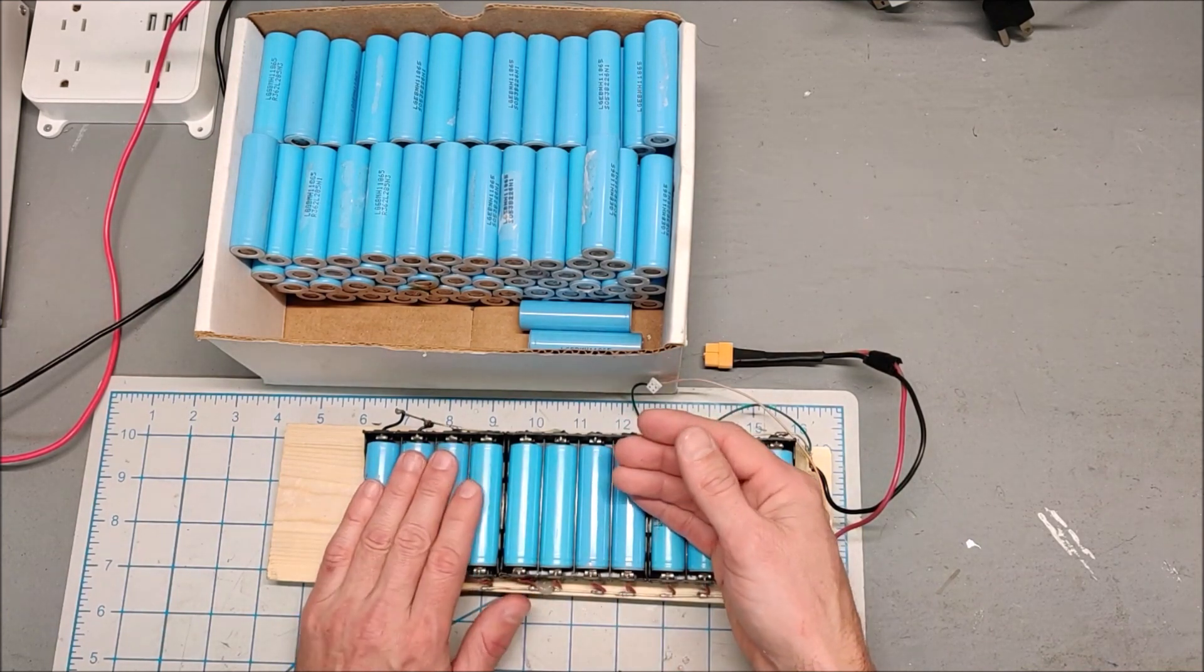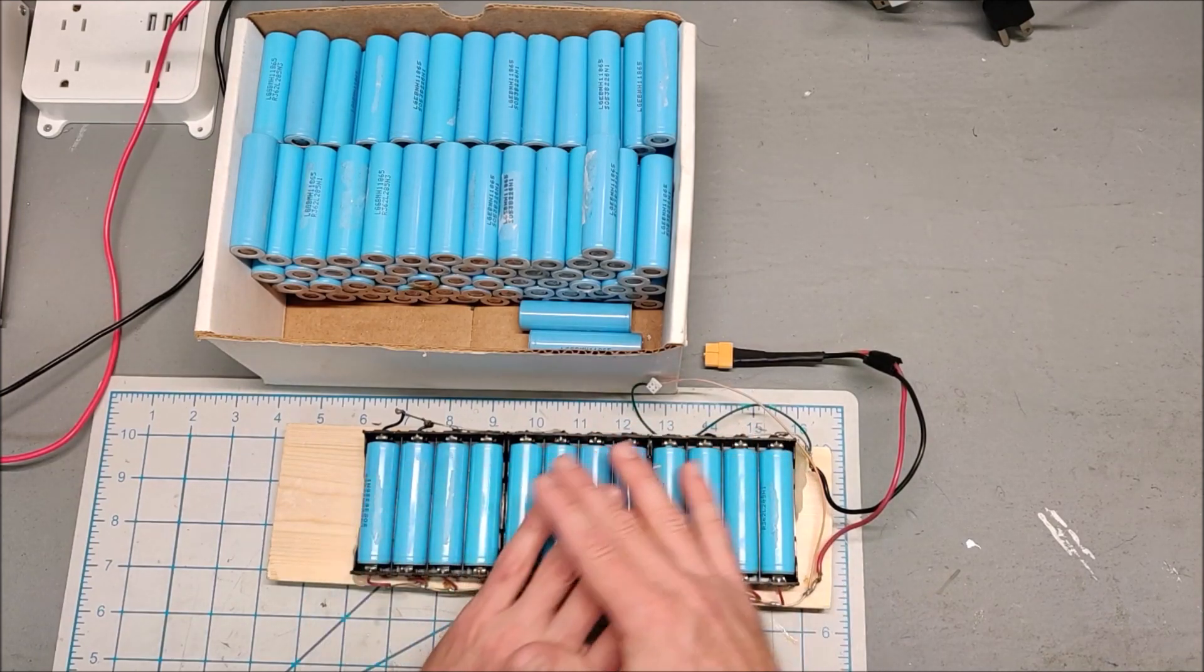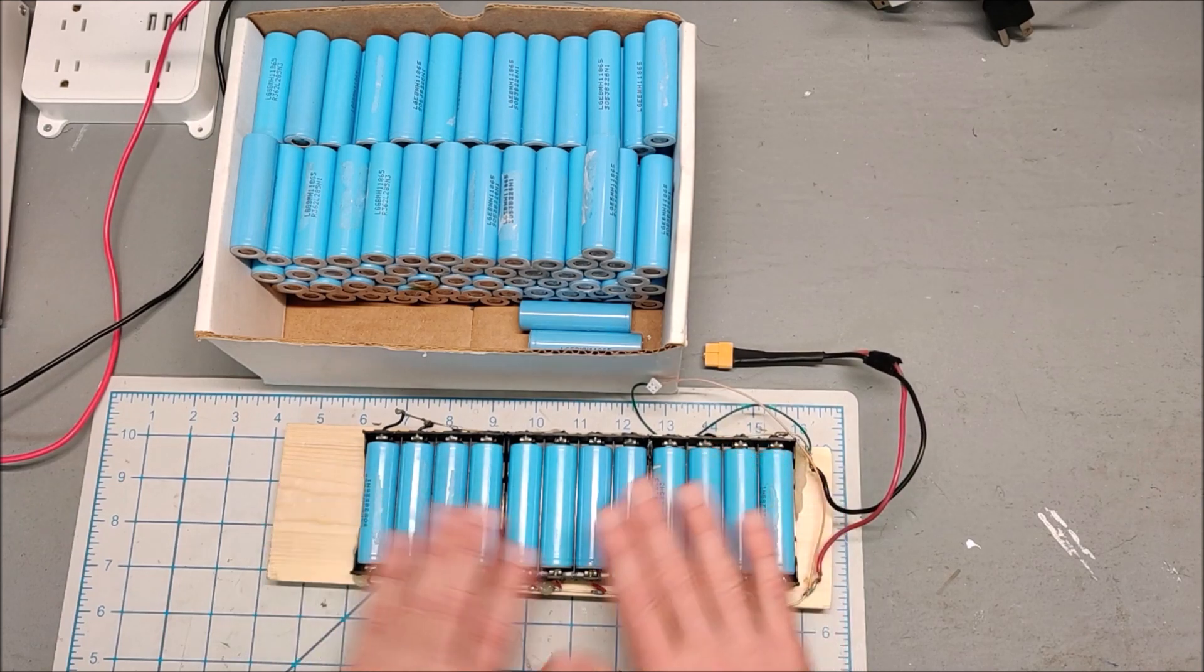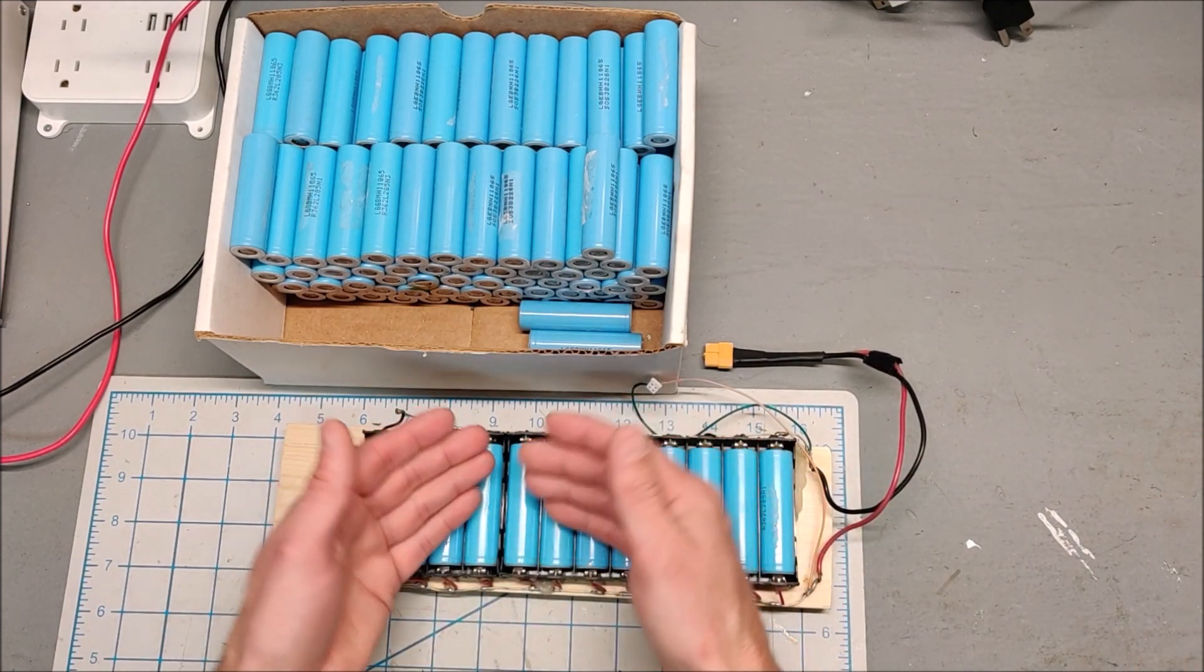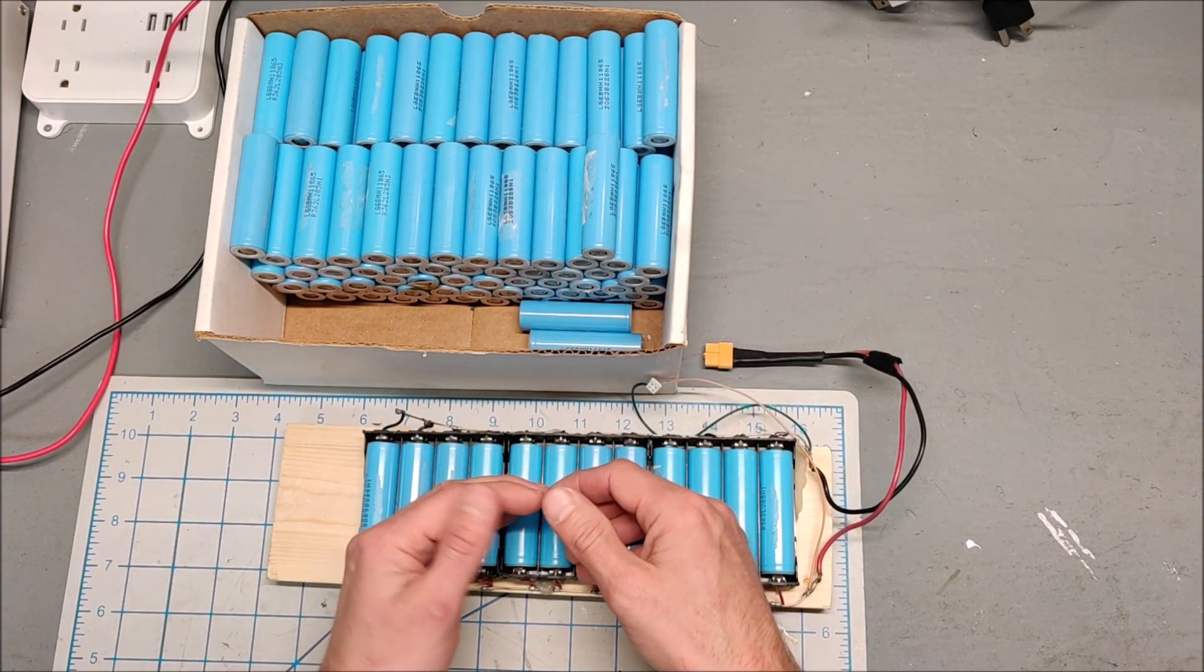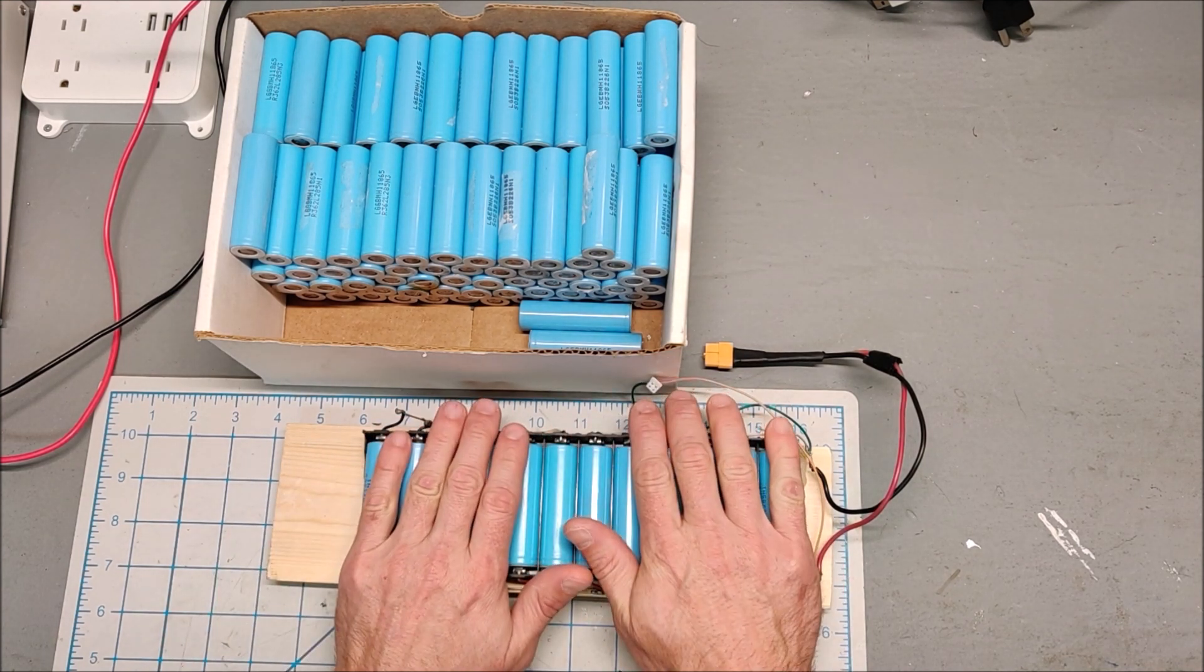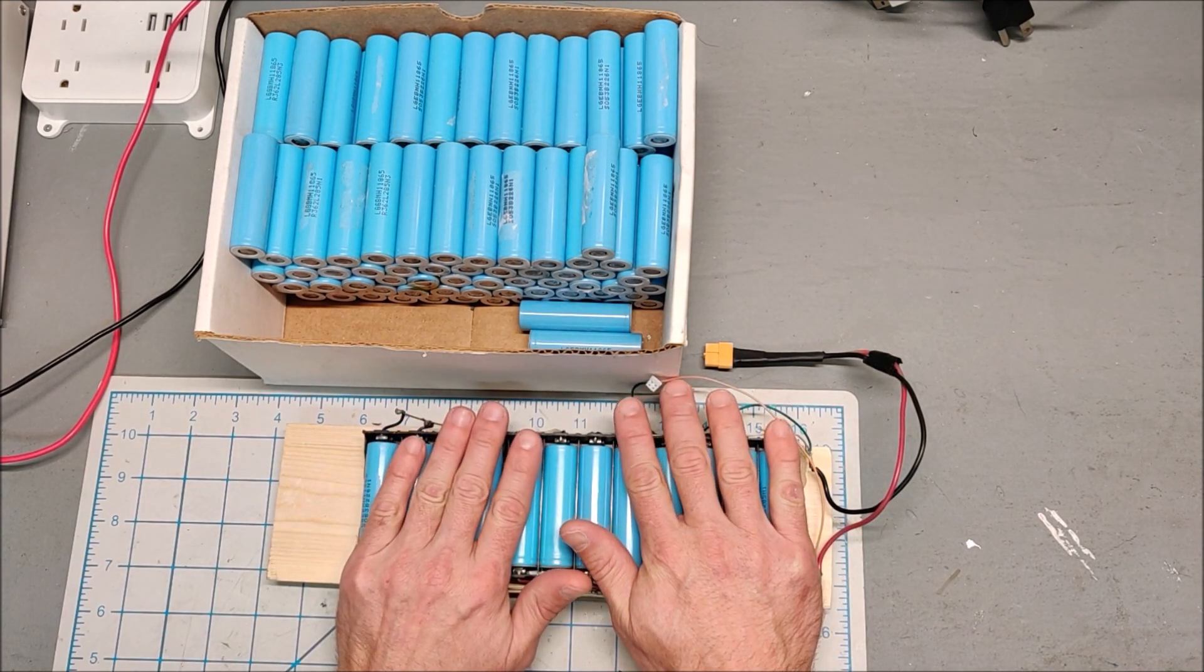And if you are going to test them, it's far more efficient to charge up the cells not using your testers. Charge them up with something else, then throw them on the testers, let the tester run. Once you get the test results, pull them off the testers and put them back into a bulk charger to bring them back up to 4.2 volts.